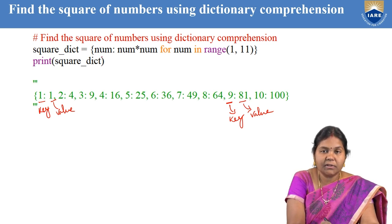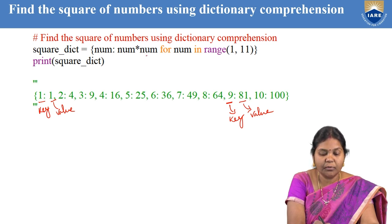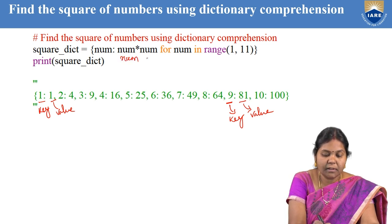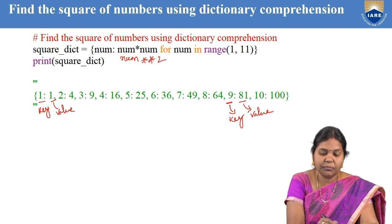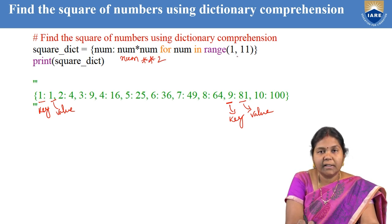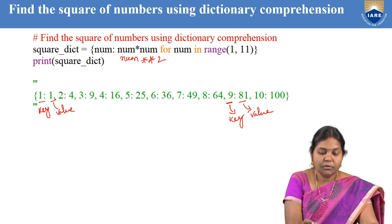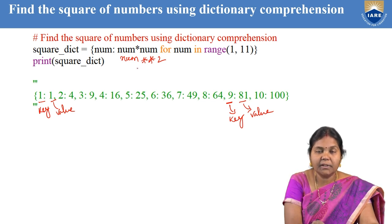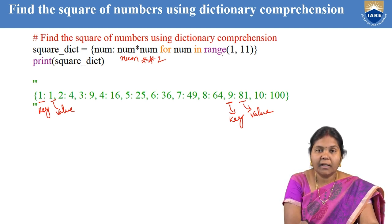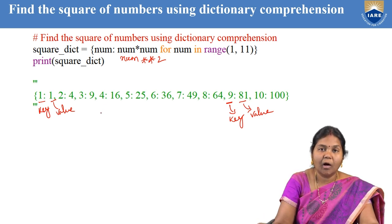The code is: square_of_dictionary is equal to num colon num times num, for every number you can write num to the power of 2 also — both ways are correct — for num in the range of 1 comma 11. It is similar to other comprehension mechanisms in Python. Here you just have to check that it should be in the key-value format. It is storing in key-value format, computing the square for every number and then storing it. This is the output of this program.